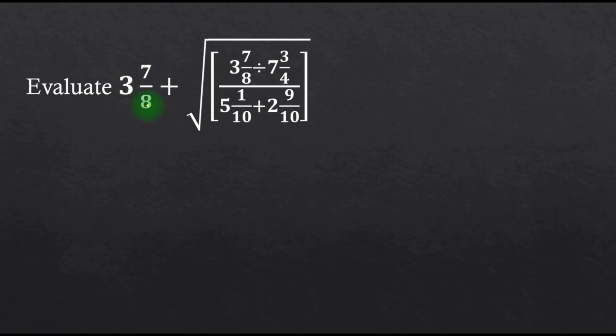We start with 8 times 3 is 24, plus 7, that is 31. So 31 over 8.